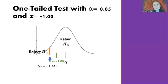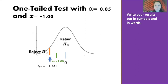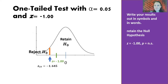For a one-tailed test with alpha equals 0.05 and z equals negative 1.00: we label the normal curve with retain and reject regions. Our critical value is negative 1.645. Our test statistic of negative 1.00 did not move beyond that critical value, so we retain the null hypothesis. In symbols: Z equals negative 1.00, p equals n.s. This means x-bar is not significantly less than mu.